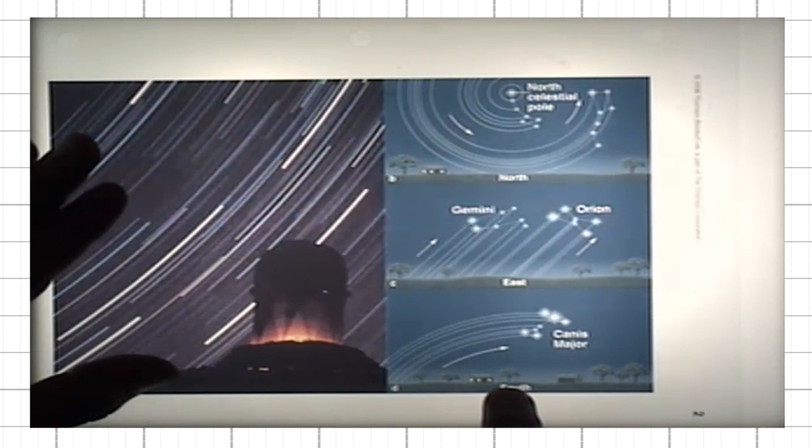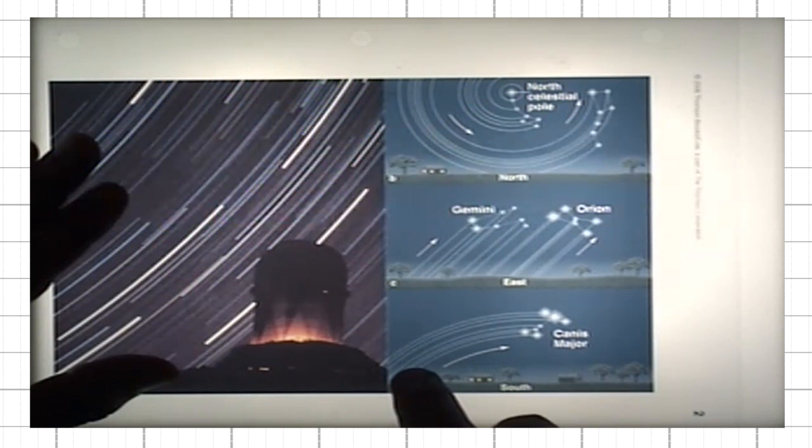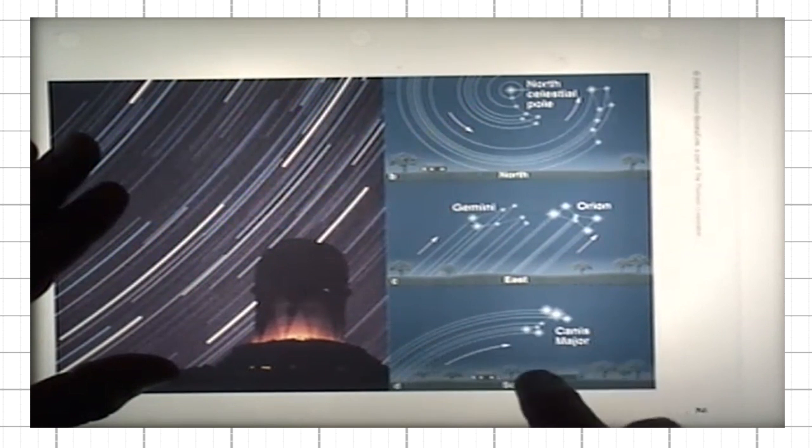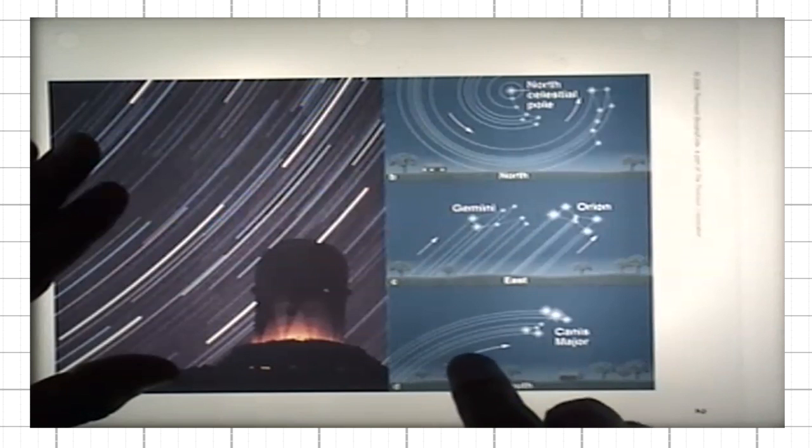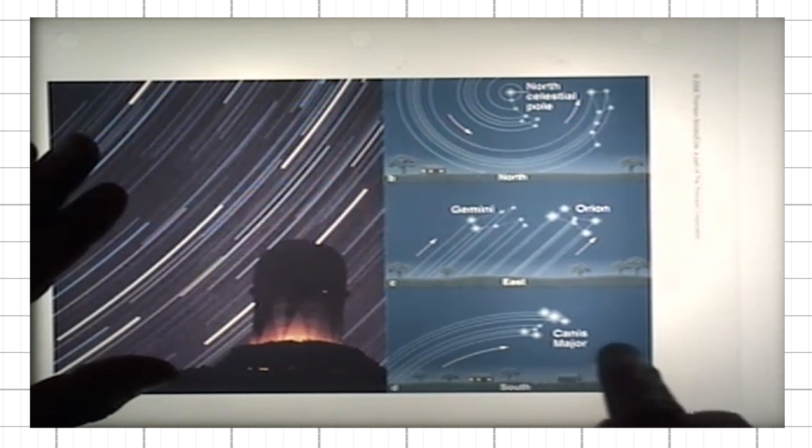Then if you look towards the south, you would see that the stars making up constellation Canis Major are rising. They are revolving around the south celestial pole because you are looking south, and then eventually they will be setting.